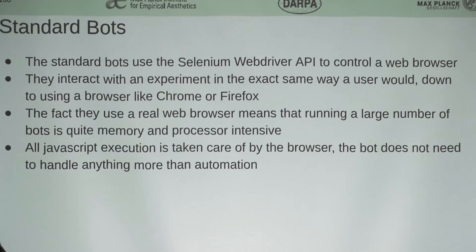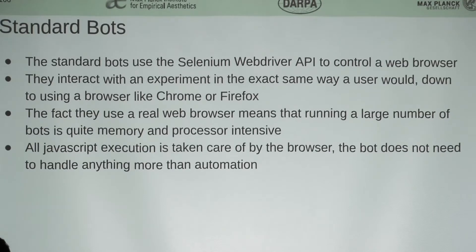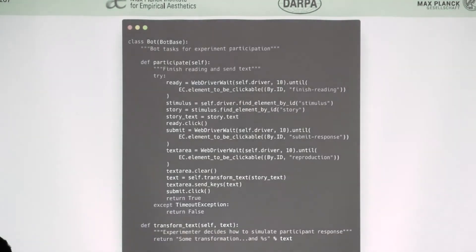There are two implementations of bots. We started off with what we call the standard bots, which use the Selenium WebDriver API, which is originally a testing API. The idea there is it allows you to delegate all the JavaScript stuff to a browser, because you don't want to have to reimplement all your experiment logic in Python for your bot to understand it. So all the bot does is it communicates with the browser running on your machine and accesses the experiment in exactly the same way as a given participant. For example, this is the bot for the Bartlett demo. The first thing it does is it waits for 'finished reading' to be clickable.